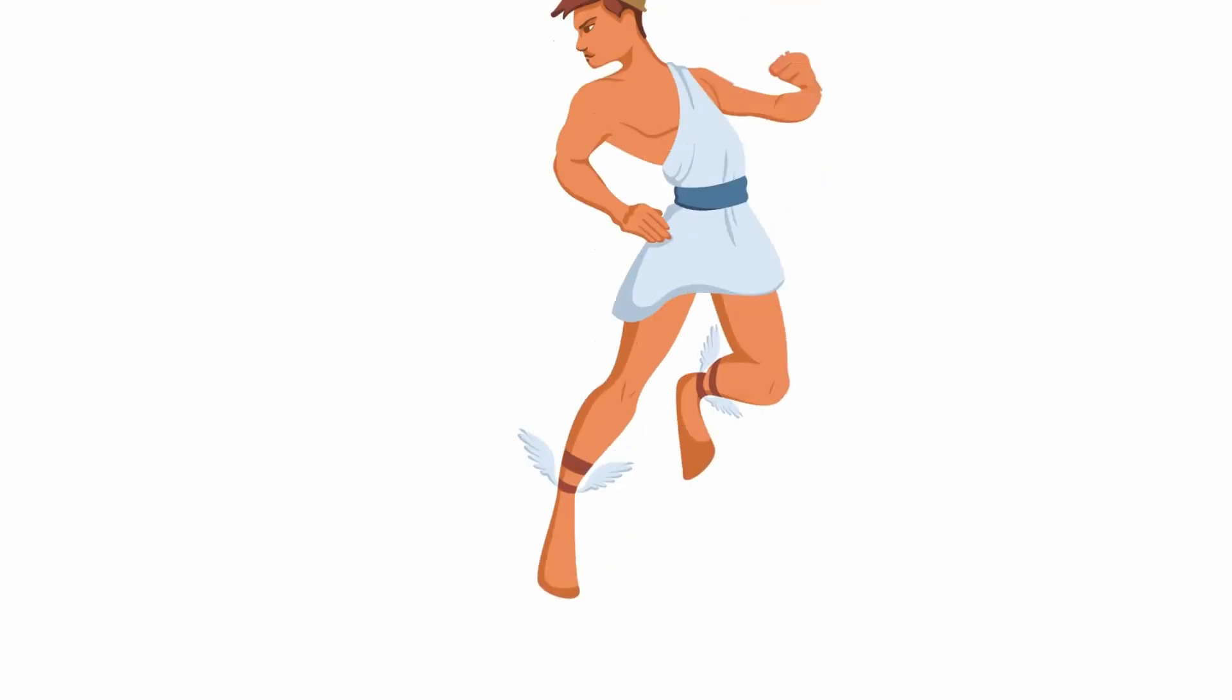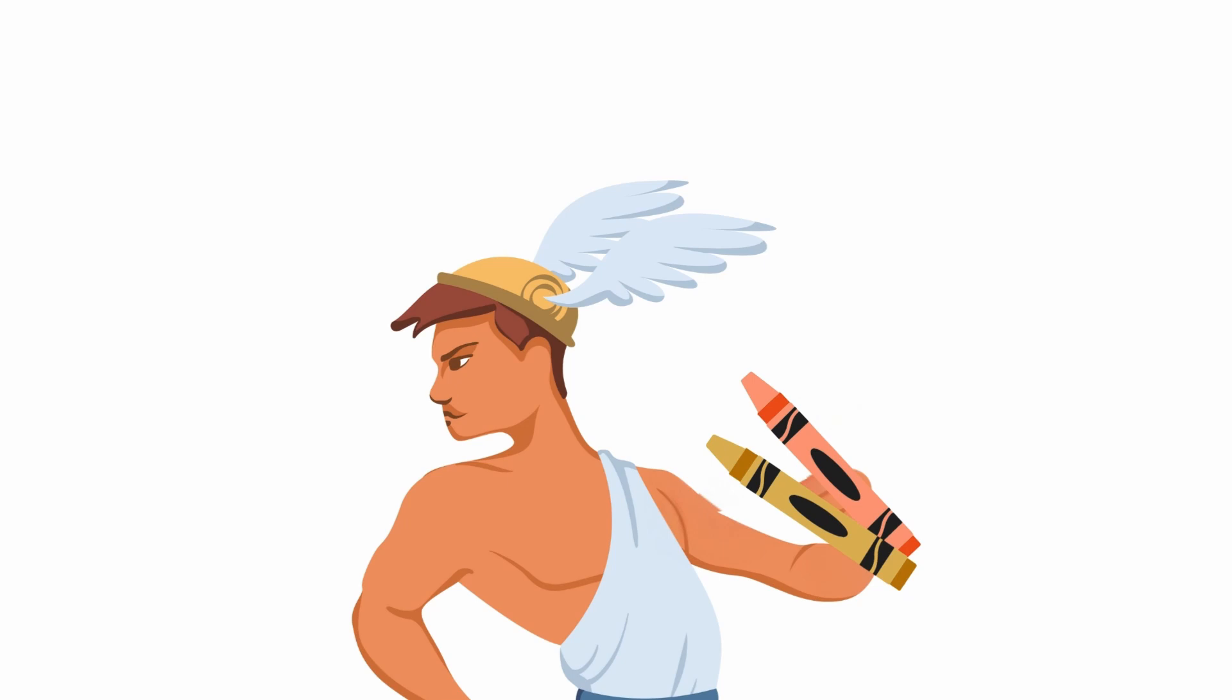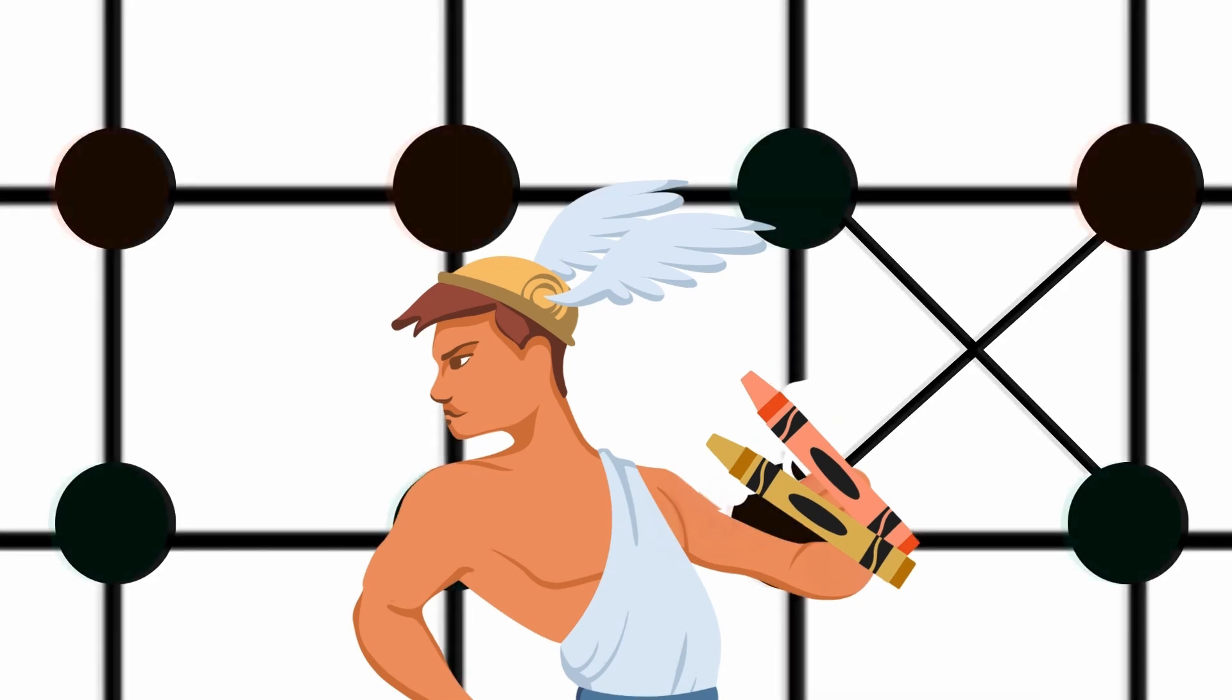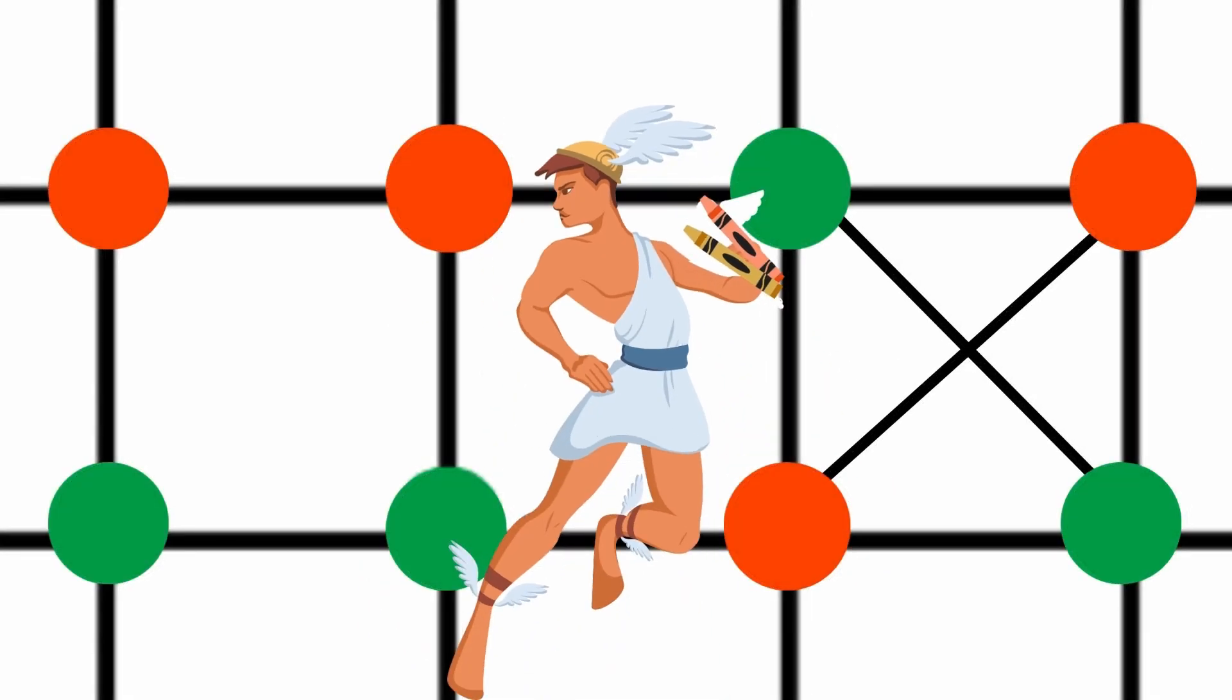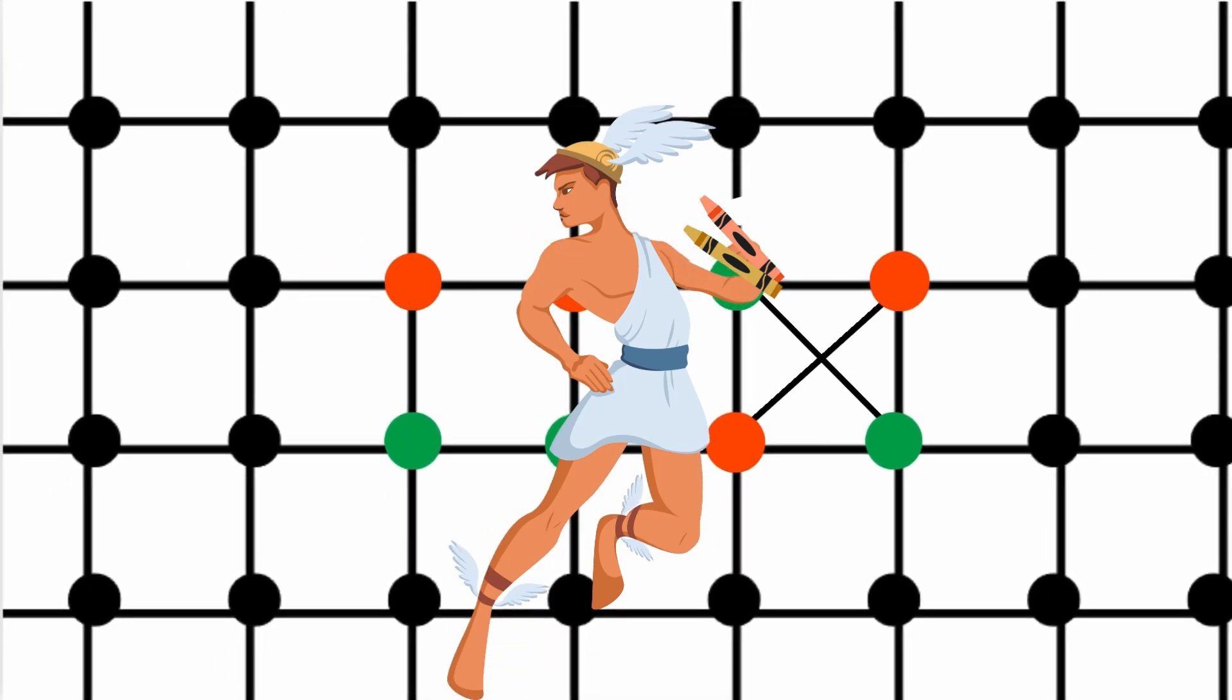We will now assume the role of a spiteful god with two crayons. We want to color every vertex to form an unfriendly partition. Supposing we are given an arbitrary countably infinite graph, can we always succeed?